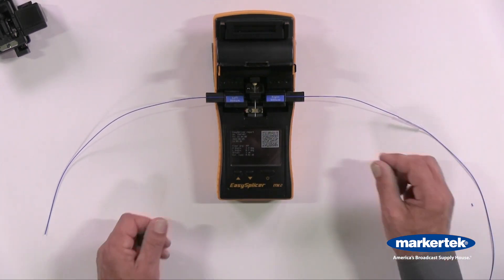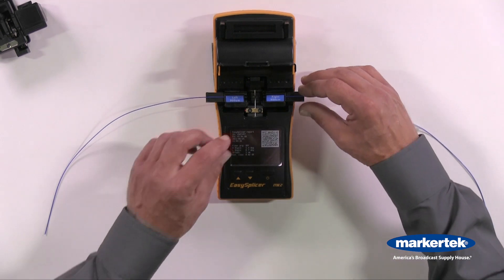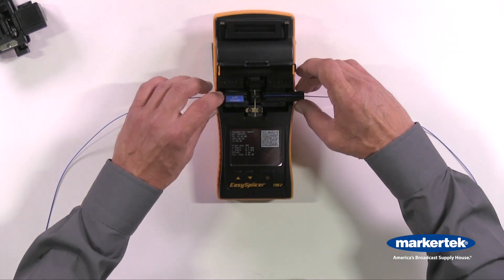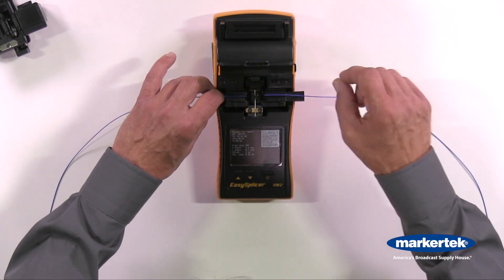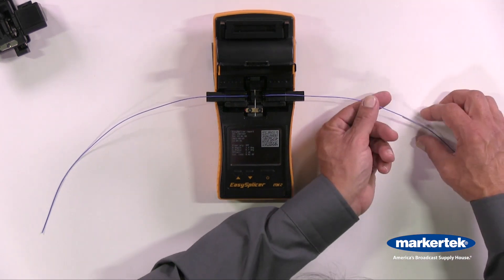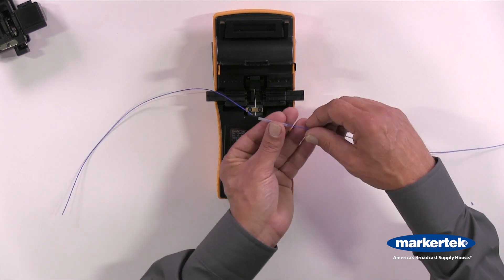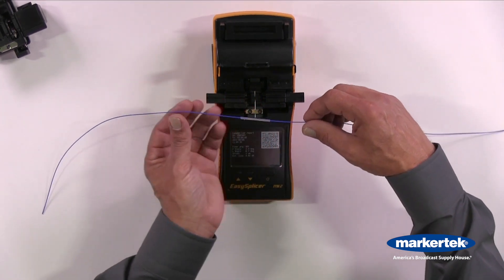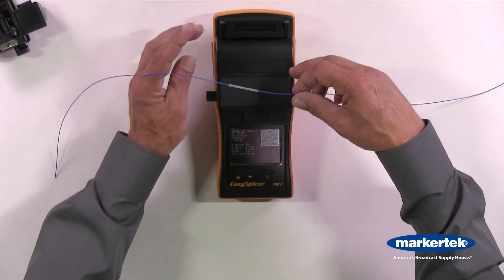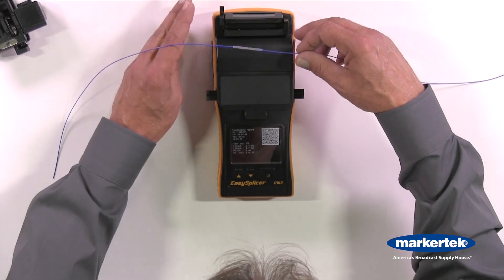And there we have. Slide the protective sleeve over the fusion splice. Open the oven.